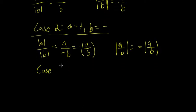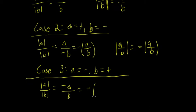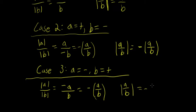Case 3: A is negative and B is positive. The absolute value of A over the absolute value of B — the absolute value of A is going to be negative A, and the absolute value of B is just B. So negative A over B is the same as the additive inverse of A over B. The absolute value of A over B in this case is also the additive inverse of A over B, because A is negative and B is positive so A over B is negative, and the absolute value of a negative number is the additive inverse of that number.